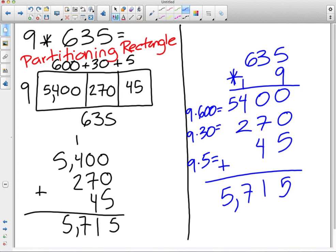And our answer is 5,715. The reason why we show you multiple strategies in fourth grade is to really find an easy way for you guys to understand multiplication. Partitioning rectangles is a fantastic way to multiply, and a lot of us have a very strong understanding of that.